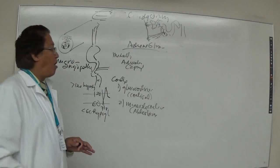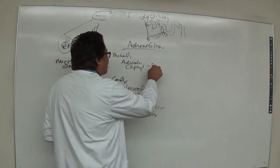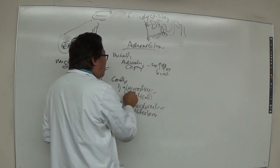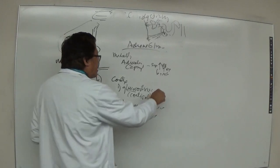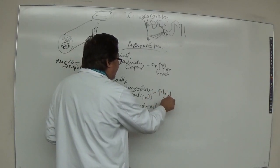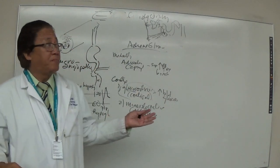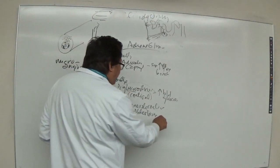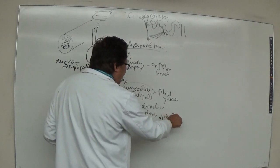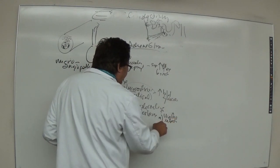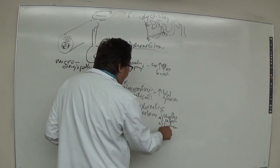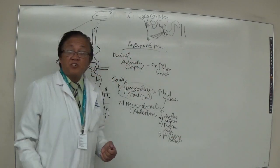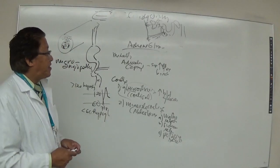Adrenaline has sympathetic effects: increased heart rate, bronchodilation, increased blood pressure. Cortisol increases blood glucose. Aldosterone causes water retention, sodium retention, and potassium excretion by the kidney.